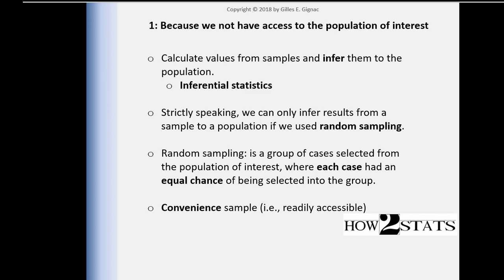That is still not as good as a random sample. The extent to which that's a problem for the results that we report in studies — almost all of which use convenience samples — we don't know how much of a problem that is. It's not a good thing, but scientists still manage to make conclusions with data that actually impact people's lives.